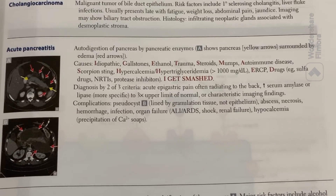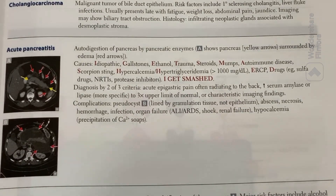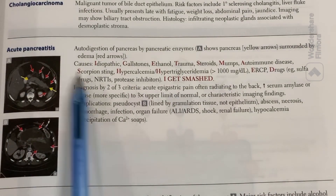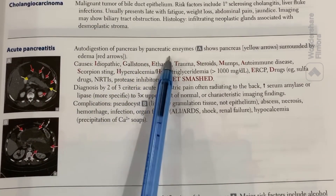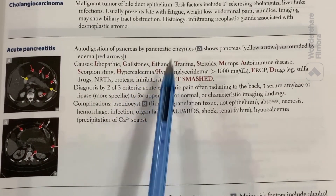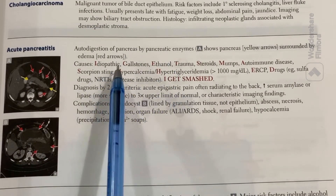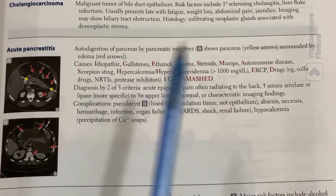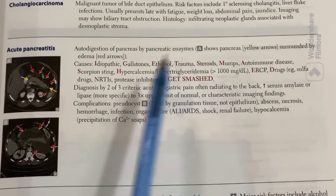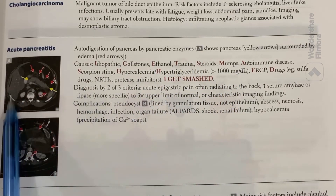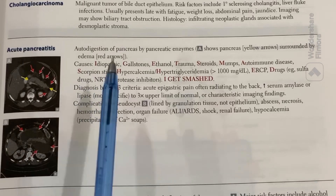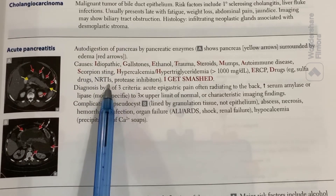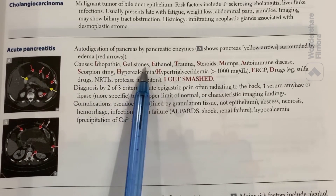The topic of today's discussion is acute pancreatitis. Acute pancreatitis may start from autodigestion by pancreatic enzymes — the pancreatic enzymes can digest the pancreatic tissue itself. You can see edema, and the causes may be idiopathic, or due to gallstones.